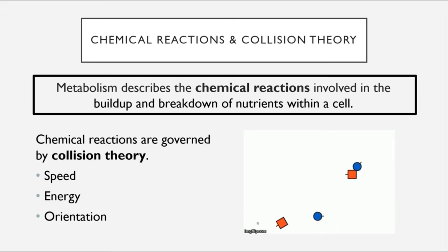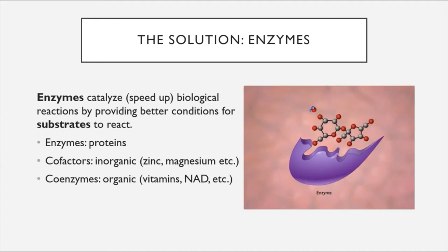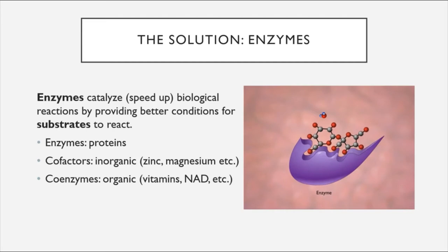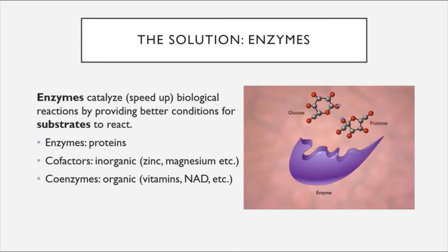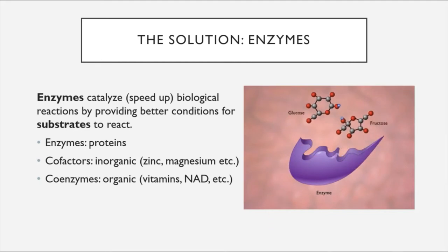Enzymes are defined as biological catalysts. A catalyst is an agent that speeds up a chemical reaction by creating better conditions for the substrates to react. The conditions for chemical reactions are normally pretty challenging—there is a pretty high threshold of requirements that chemicals have to meet in order to react. What enzymes do is create a special space with the perfect conditions to facilitate the connection of the reactants, or as they are called, substrates.